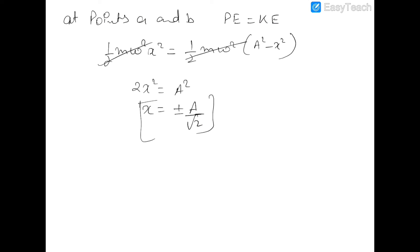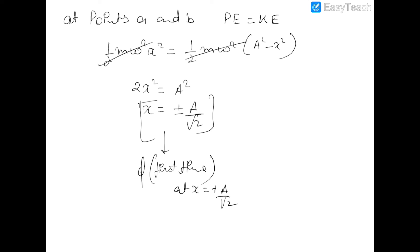At x equal to plus a by root 2 or minus a by root 2, the kinetic and potential energies are equal. To find the time for the first occurrence, when the particle is at x equal to a by root 2, the phase is pi by 4 because sine 45 degrees equals 1 by root 2. If this phase equals omega t, then this time is equal to T by 8, substituting omega equals 2 pi by T. So for the first time in SHM, the kinetic and potential energies are equal at time T by 8.